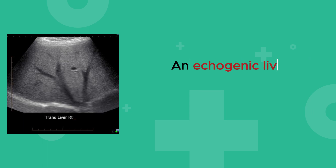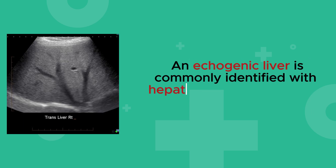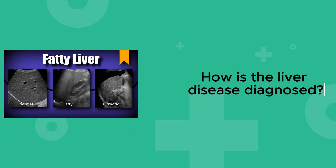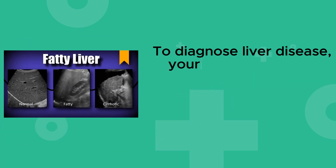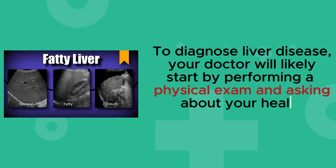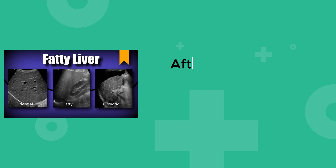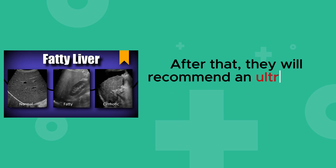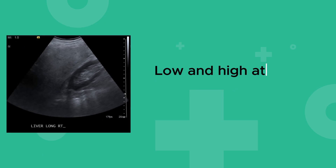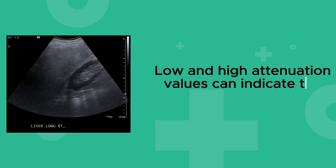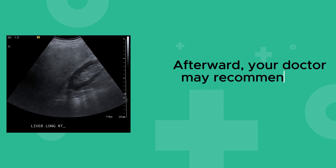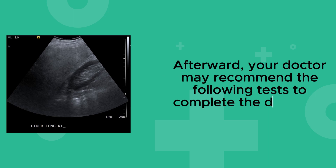An echogenic liver is commonly identified with hepatic steatosis, or fatty liver disease. To diagnose liver disease, your doctor will likely start by performing a physical exam and asking about your health history. After that, they will recommend an ultrasound test to check for liver attenuation. Low and high attenuation values can indicate the presence of disease, and your doctor may recommend the following tests to complete the diagnosis.